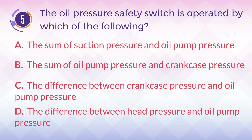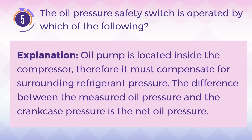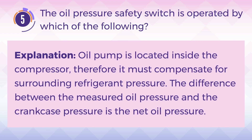The answer is C. The difference between crankcase pressure and oil pump pressure. Explanation: The oil pump is located inside the compressor, therefore it must compensate for surrounding refrigerant pressure. The difference between the measured oil pressure and the crankcase pressure is the net oil pressure.